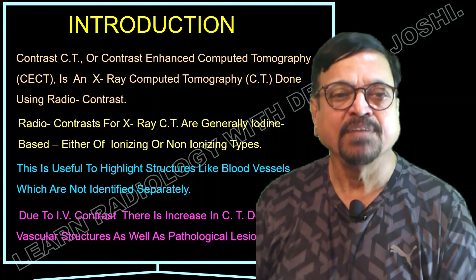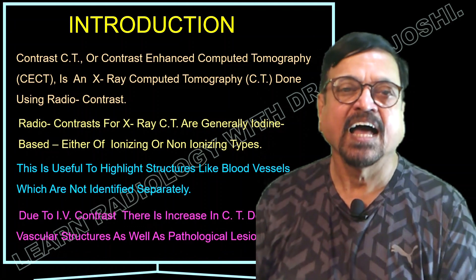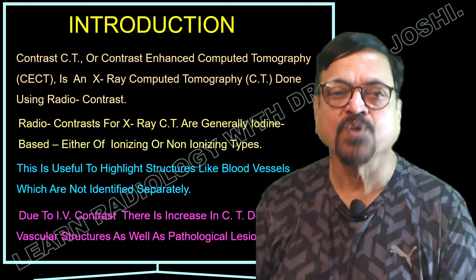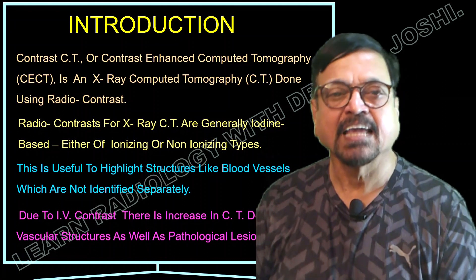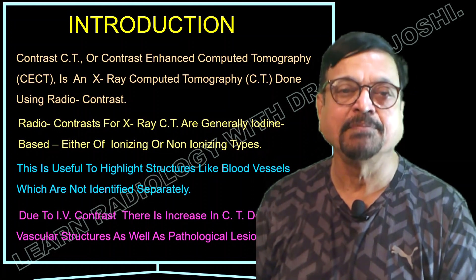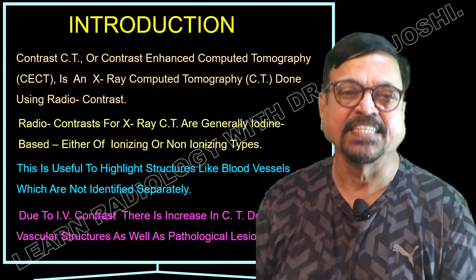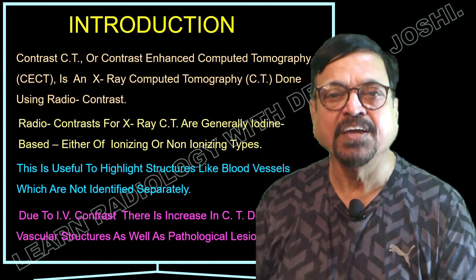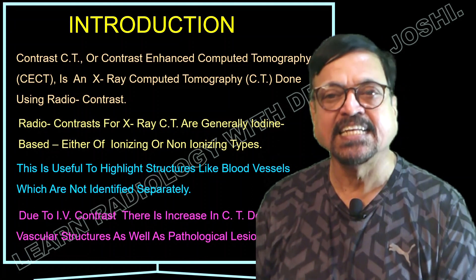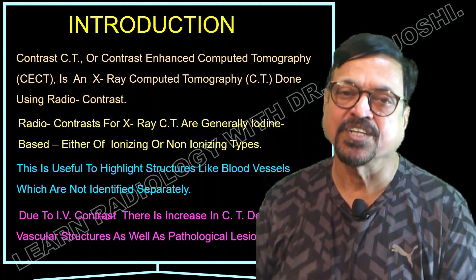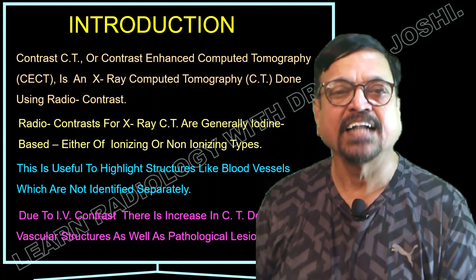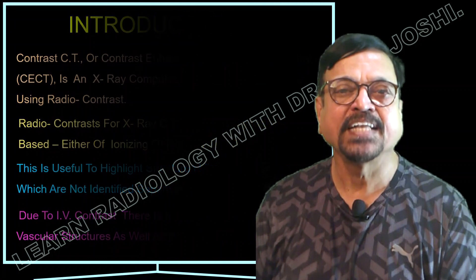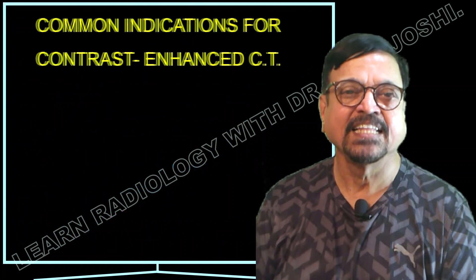With the help of a pressure injector, IV contrast is given and the blood vessels are seen to enhance. There is an arterial phase, capillary phase, and venous phase; depending on the requirement, these phases are acquired. Due to IV contrast, there is an increase in CT density of vascular structures — arteries shine out more in the arterial phase — followed by capillary and venous phases, known as triphasic imaging.